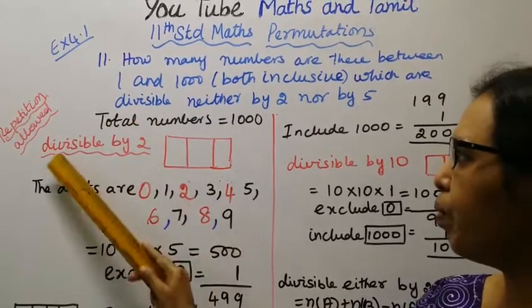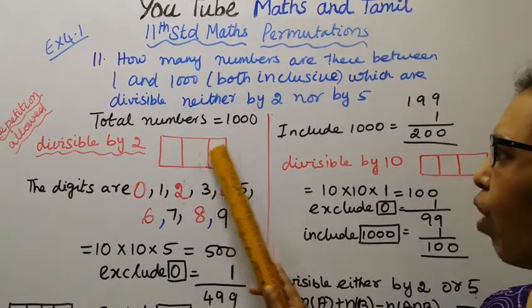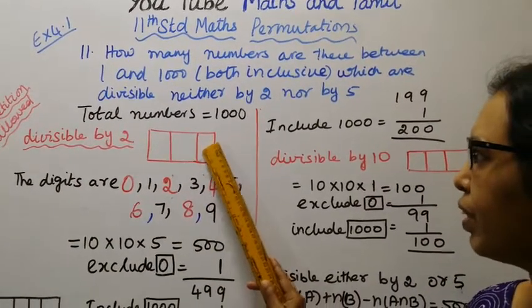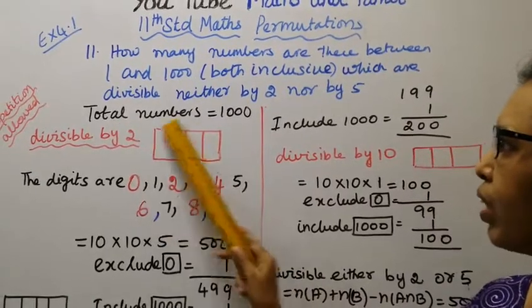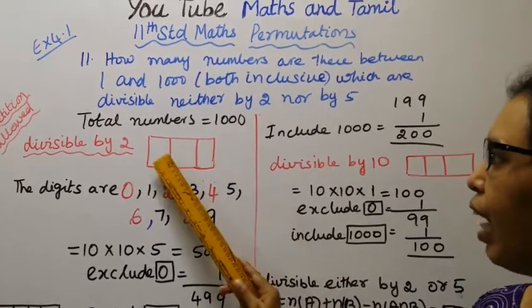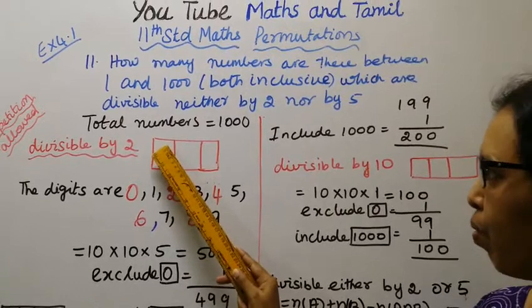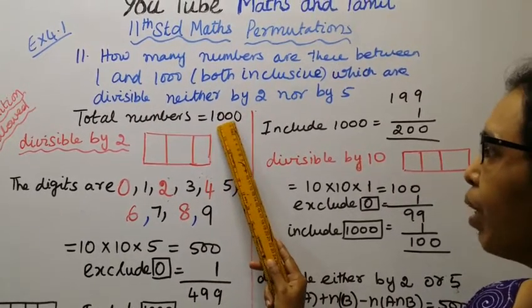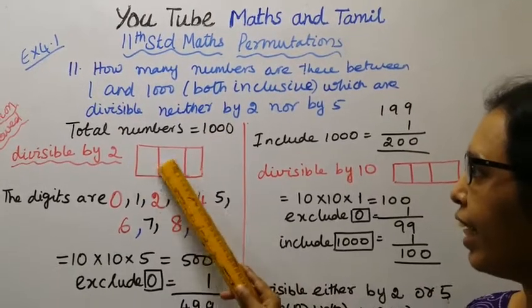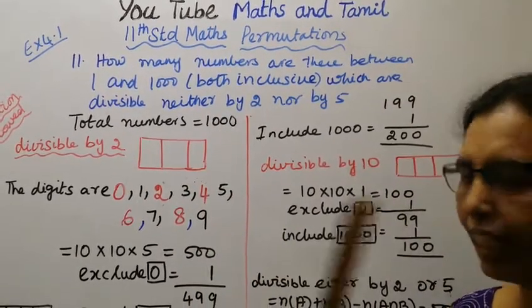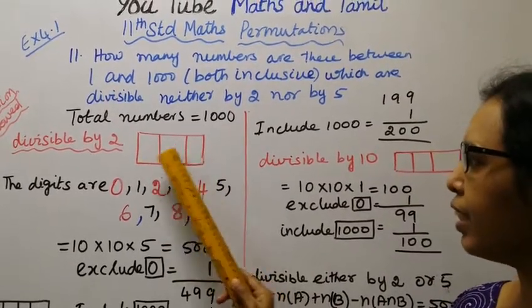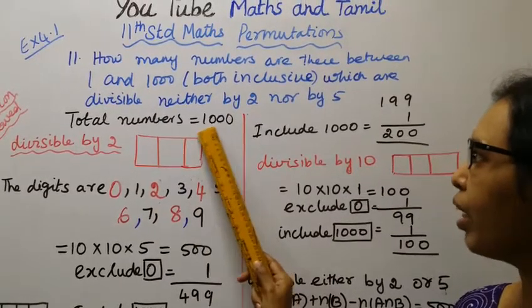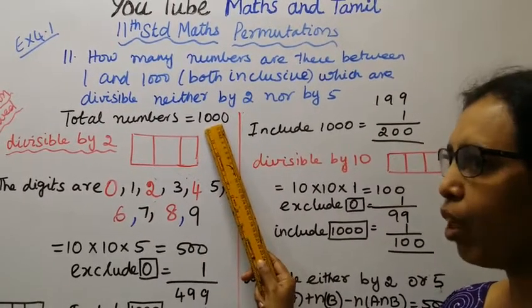Divisible by 2. 3 columns, 1st place, 2nd place, 3rd place. Total numbers, 1,000. From 1 and the start, 999. 3 digits. 999. 1,000 numbers.